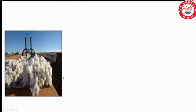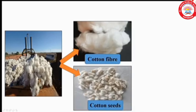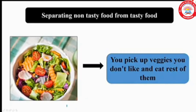The next example is separation of seeds from cotton fiber, which is called ginning — already studied in the third lesson. The two components are cotton fiber and cotton seeds. Another interesting example is a vegetable salad: if there are some vegetables you don't like, you separate them and eat the rest.